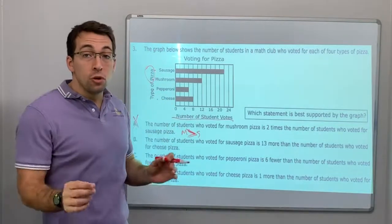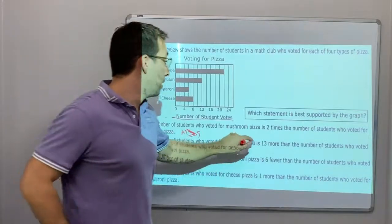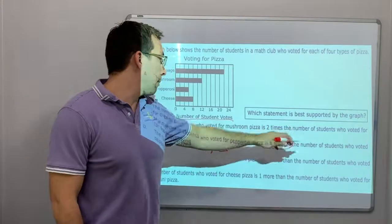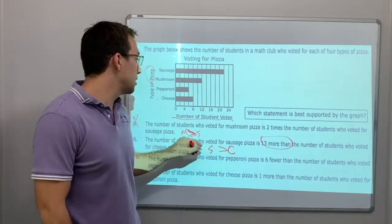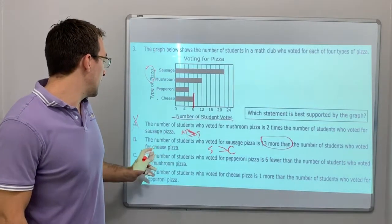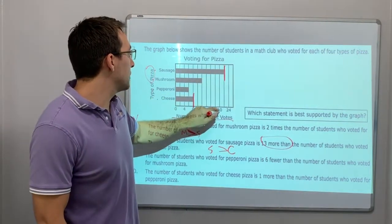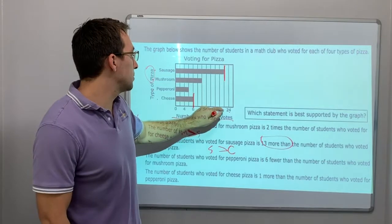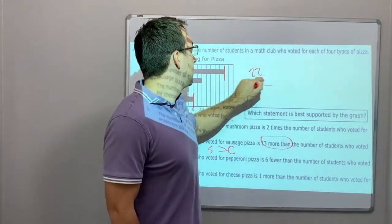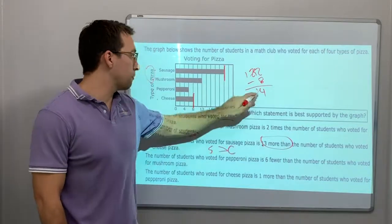Choice B: the number of students who voted for sausage is 13 more than the number who voted for cheese. Cheese is 8, and sausage is about 22 — halfway between 20 and 24. So 22 minus 8 equals 14, not 13. That's not right.